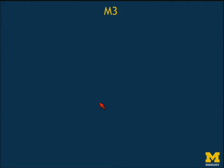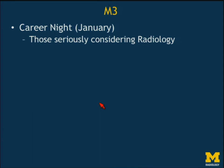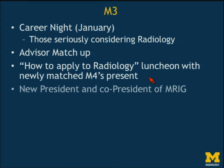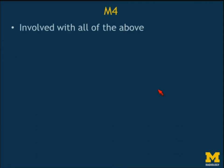The M3 year is a bit more difficult because they're in their clerkship. They do have a career night in January where, after a lecture, they do a breakout session to different areas. They come to the radiology area and that's when I find out who is seriously considering radiology. I match them up with an advisor, give them a 'how to apply to radiology' lecture over lunch, invite the newly matched M4s for a Q&A panel, and decide who the new president and co-president of MRIG will be — usually someone who's shown interest since first or second year.